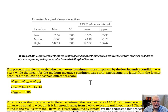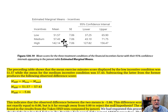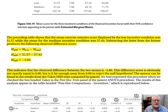The preceding table shows that the mean exercise minute score displayed by the low incentive condition was 51.57, while the mean for the medium incentive condition was 57.43. Subtracting the latter from the former produces an observed difference score of negative 5.86. This difference score is obviously not exactly equal to zero, but is it far enough away from zero for us to reject the null hypothesis? The answer can be found in the results produced by the Tukey HSD test.